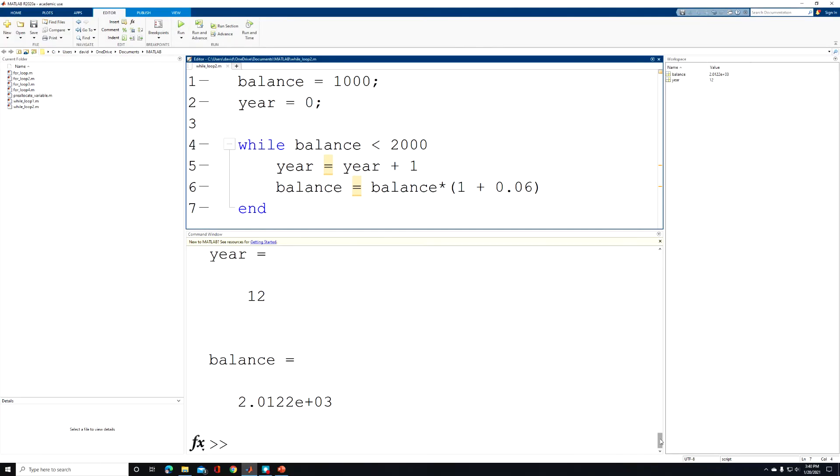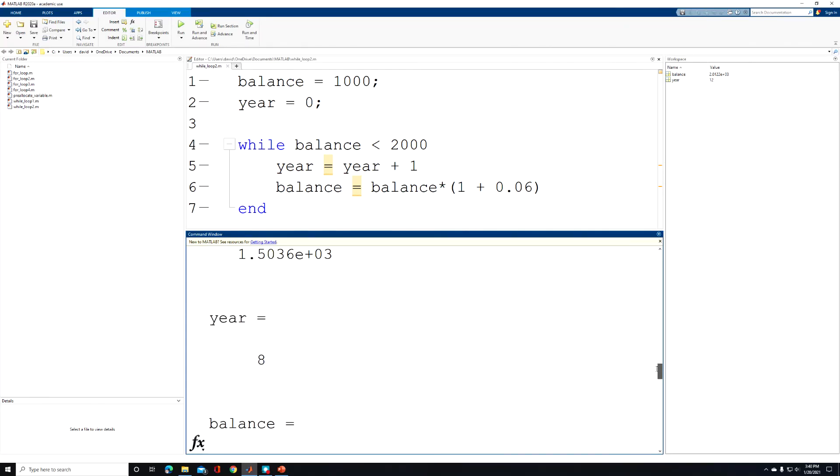And what you get here is the year and the current account balance. So after our first year, our balance is $1,060. After the second year, $1,124, and so on and so forth until we get to year 12.